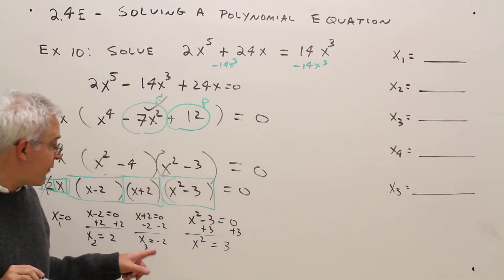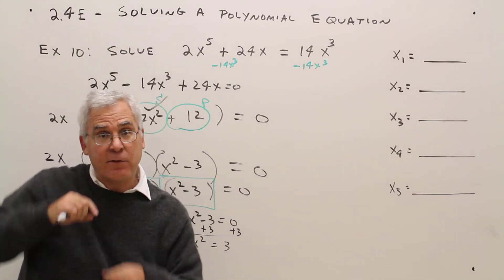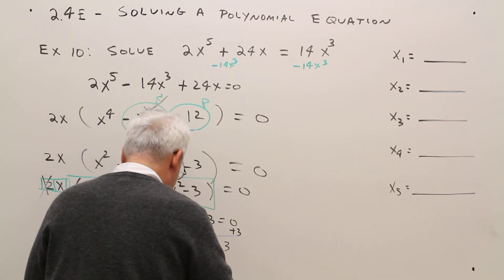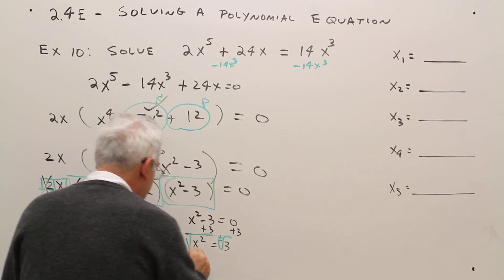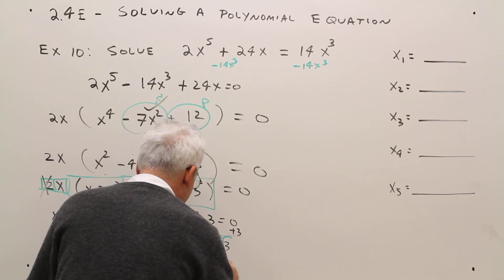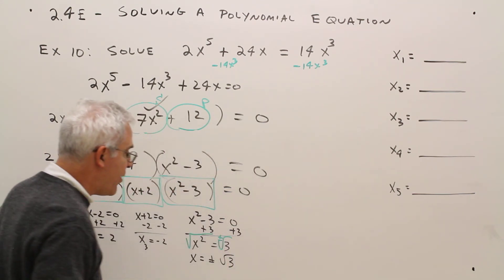And what undoes squaring? Plus or minus square rooting. So I'll square root this, and I'll plus or minus square root that, and I get x equals plus or minus the square root of 3.